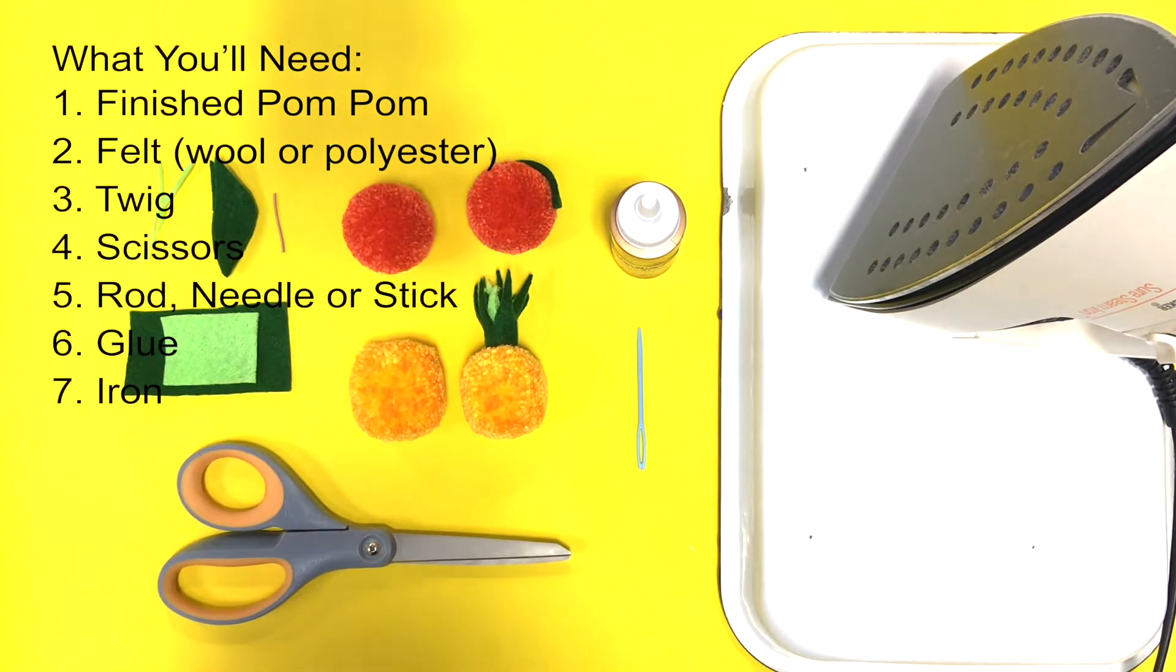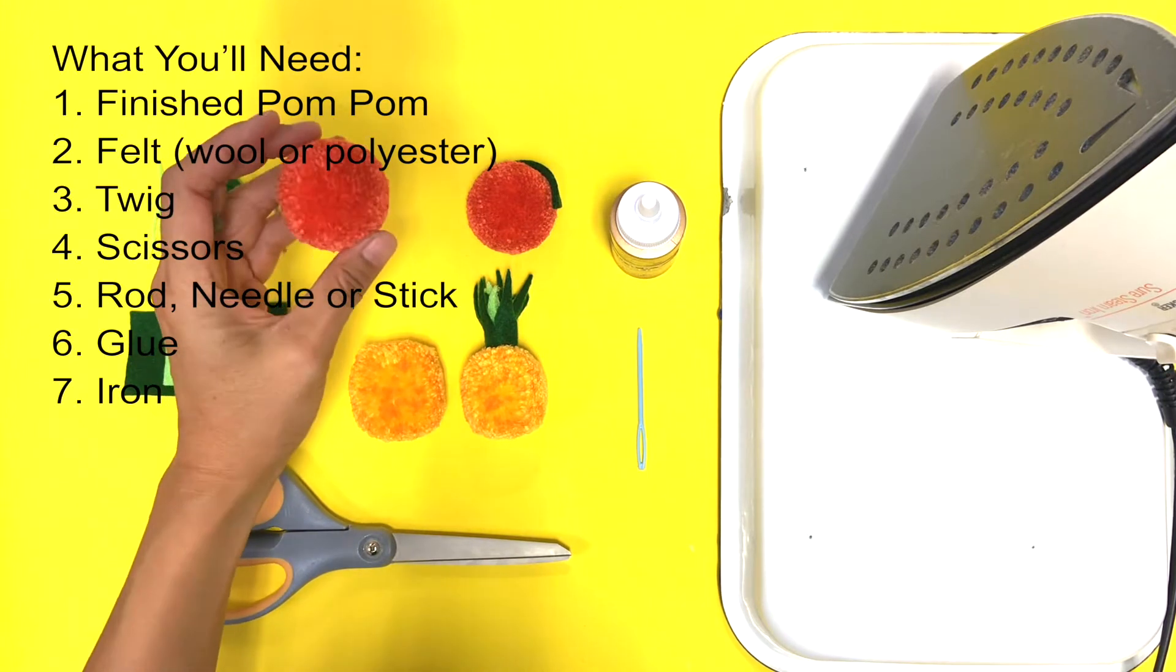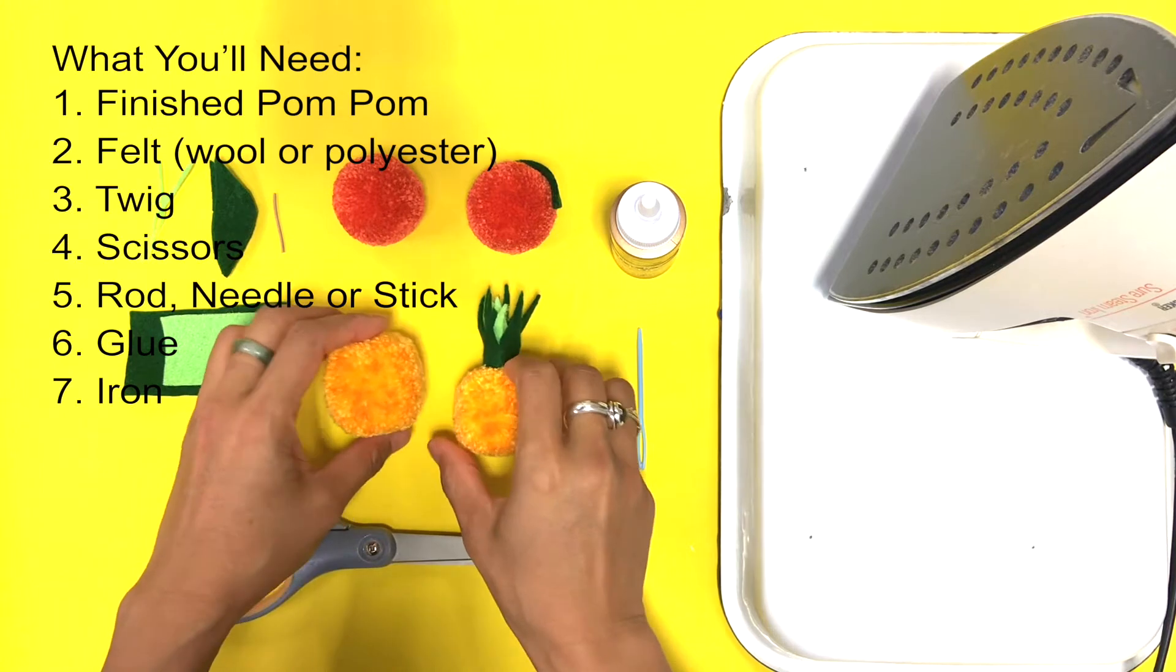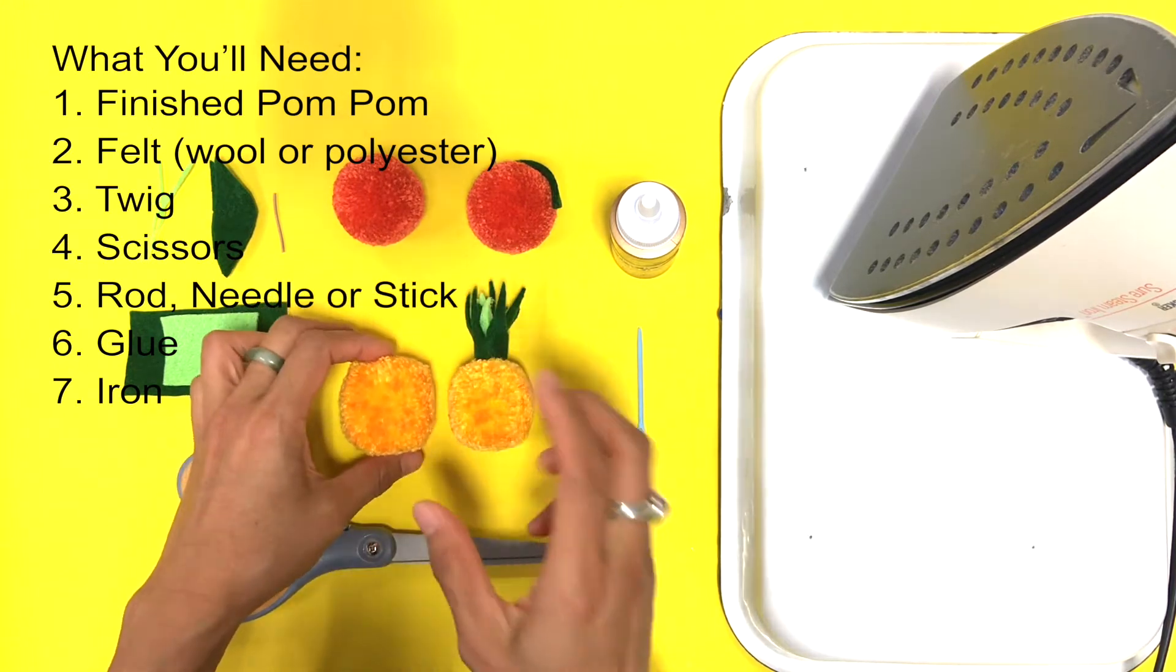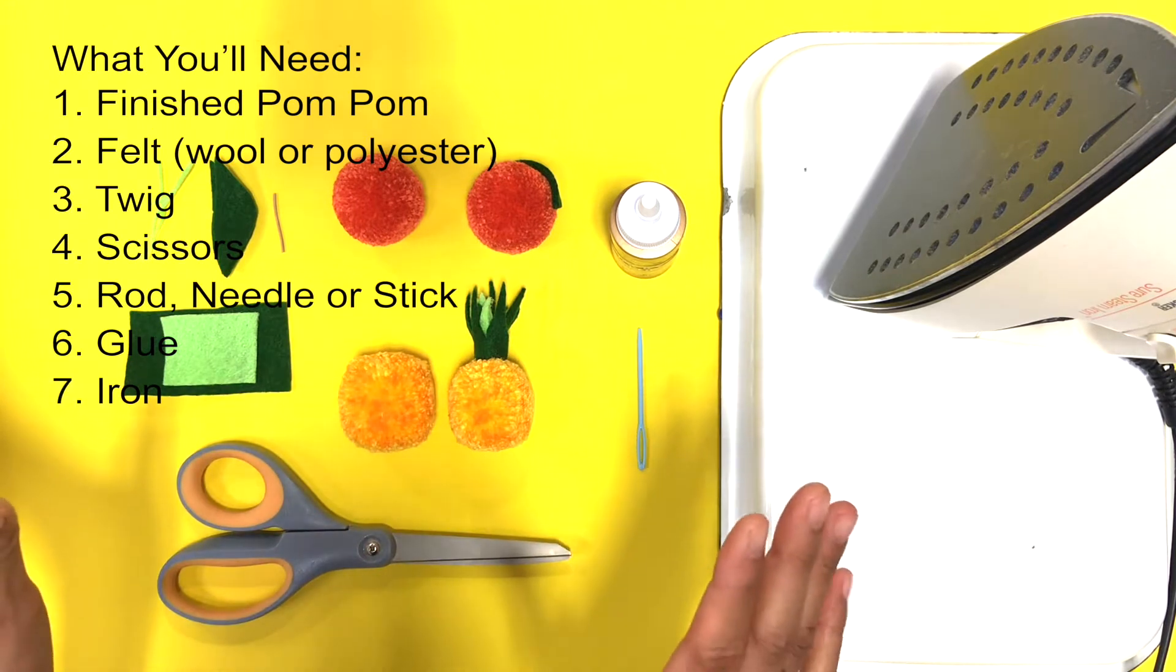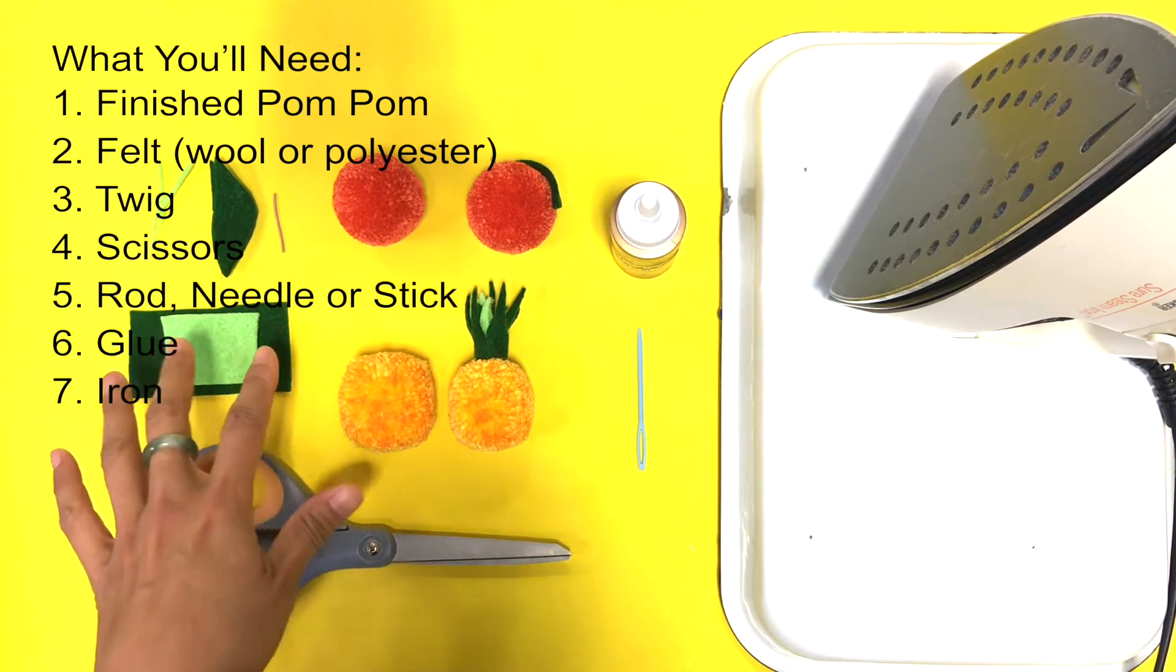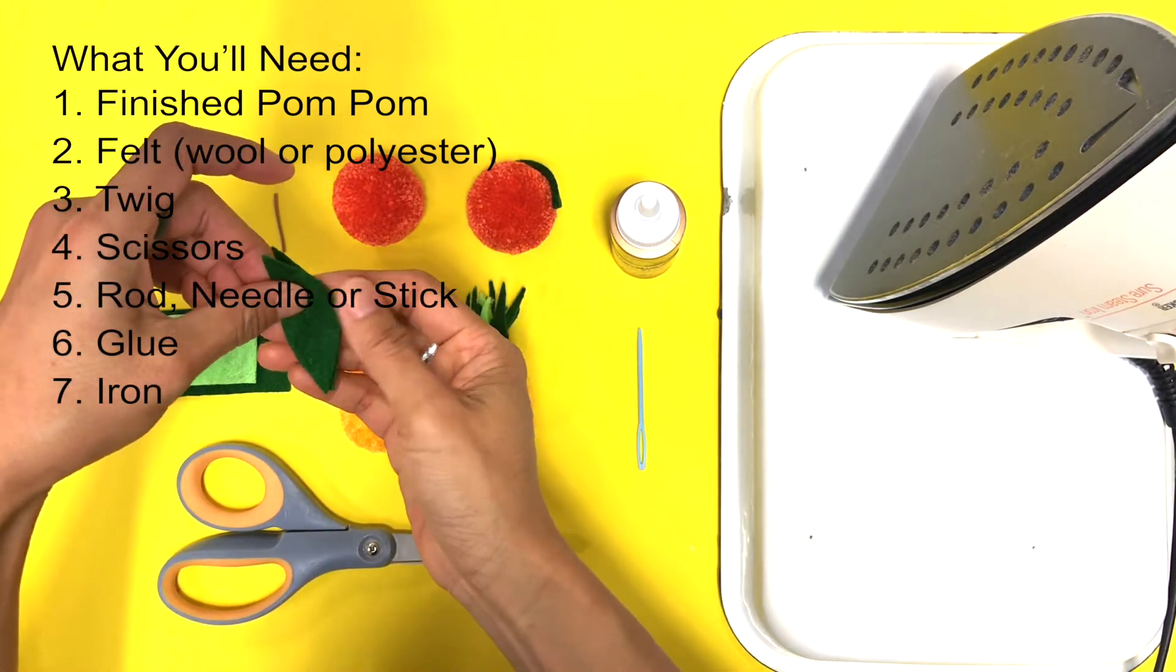What you'll need are finished pom-poms. For an orange, you're going to trim it down to a round shape. For a pineapple, you want to trim it down more like an oblong shape, or you could actually have it round as well - it looks super cute.